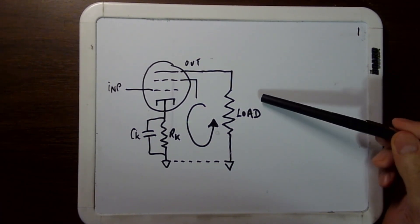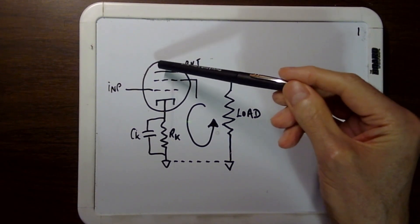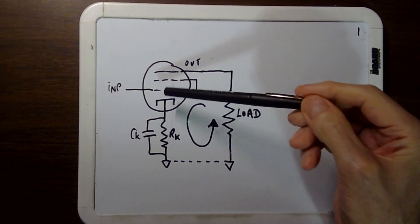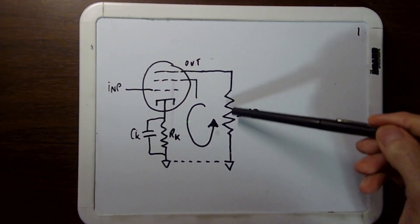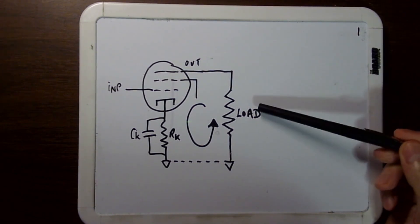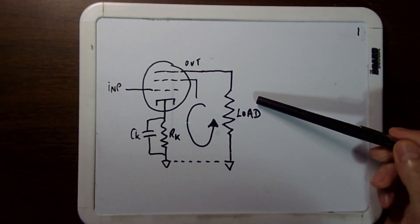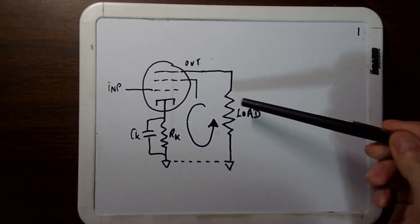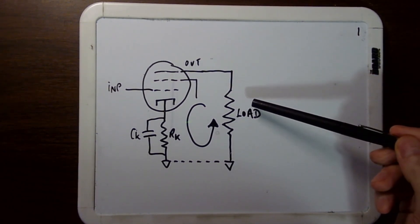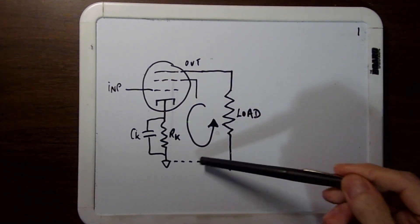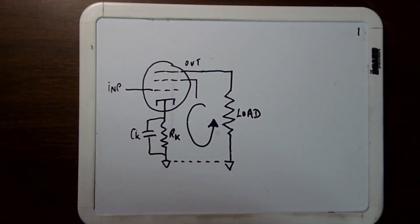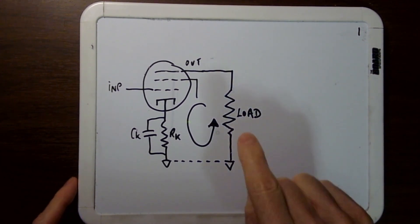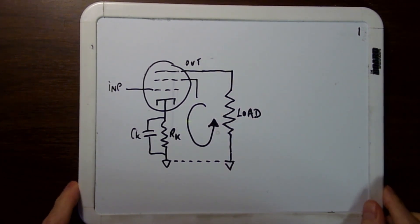Let's assume there's no output transformer. This is your 6V6 — this is the plate, this is the cathode — and the current goes like this. Let's assume the load is right in the circuit, so the load will be the speaker. This is a simplified version of that circuit: the plate circuit of the 6V6, with the load being the speaker.